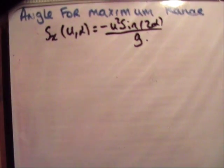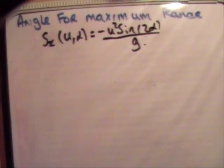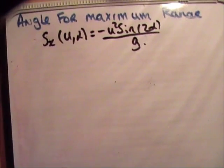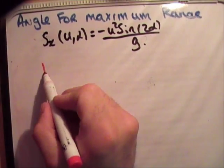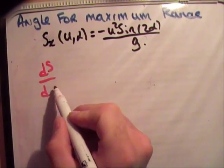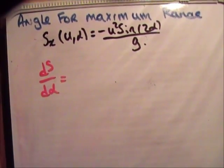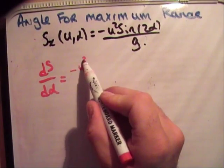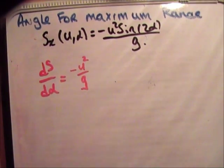Now, I said I wanted to differentiate it with respect to alpha. So, I want to get ds d alpha. So, ds d alpha is equal to... Well, look, u squared doesn't matter because it's not a function of alpha. So, it's minus u squared over g, like so.